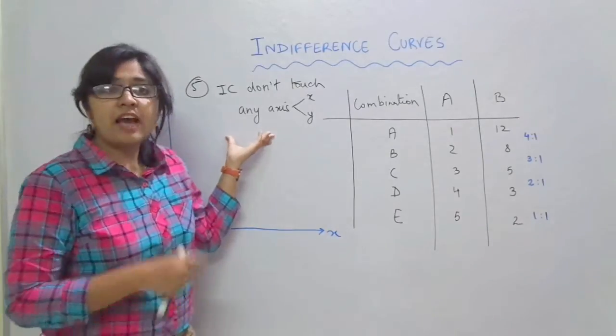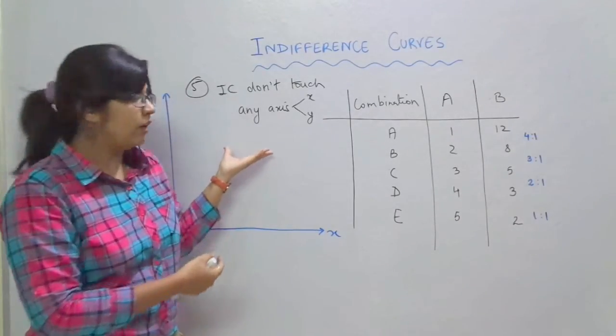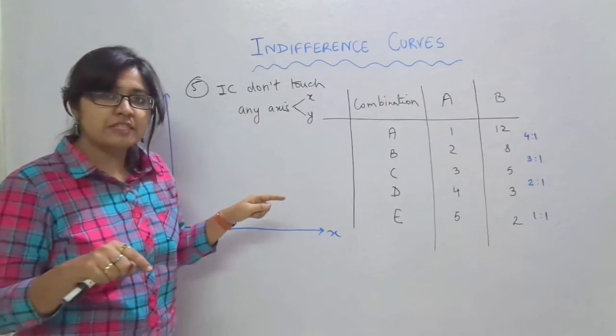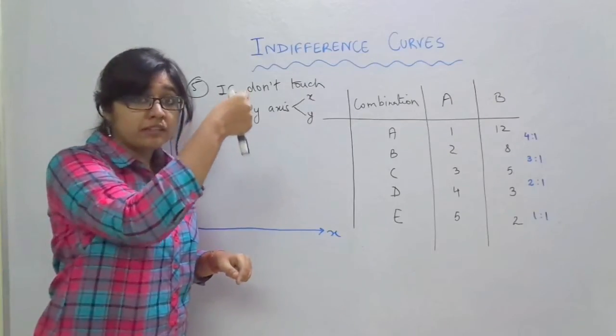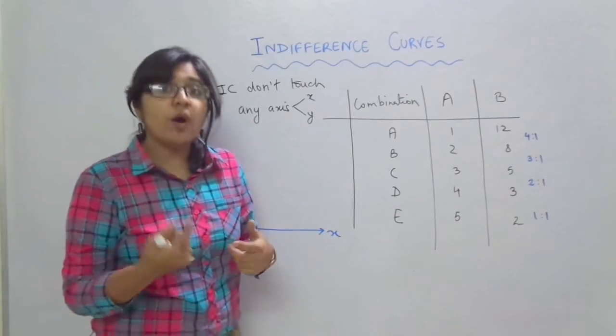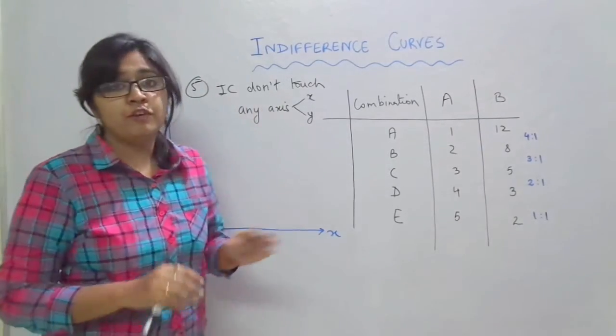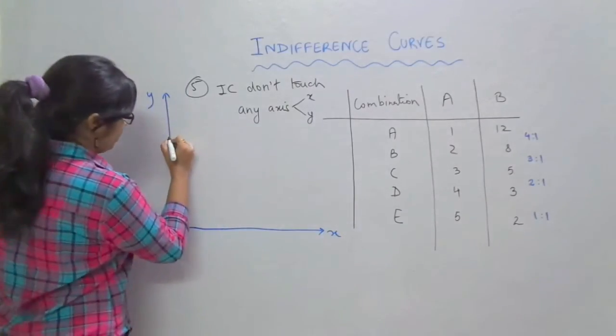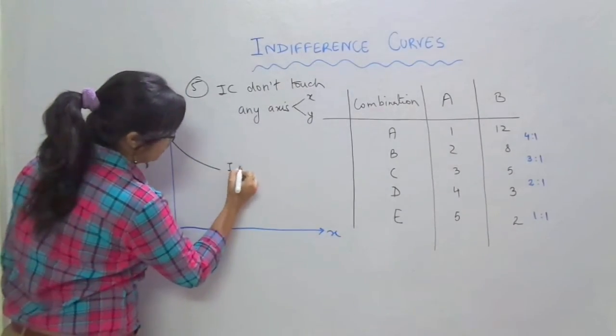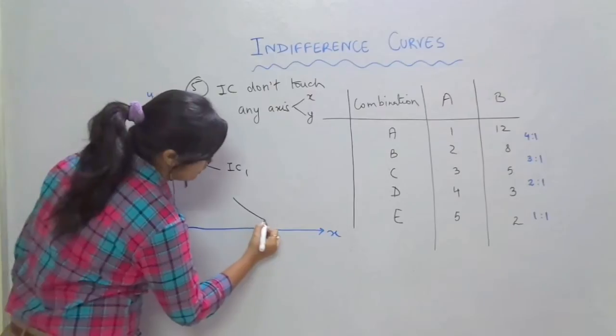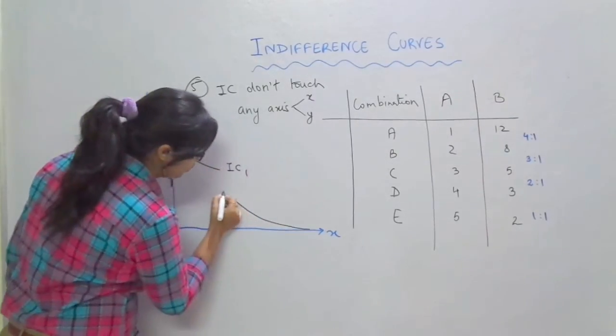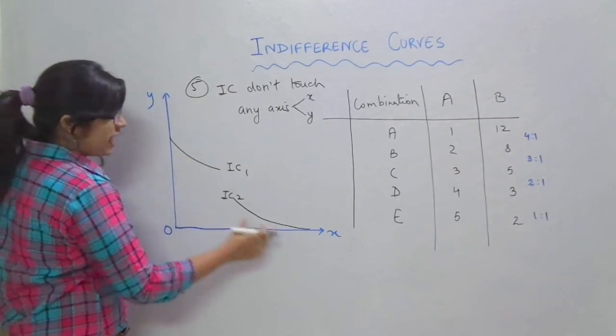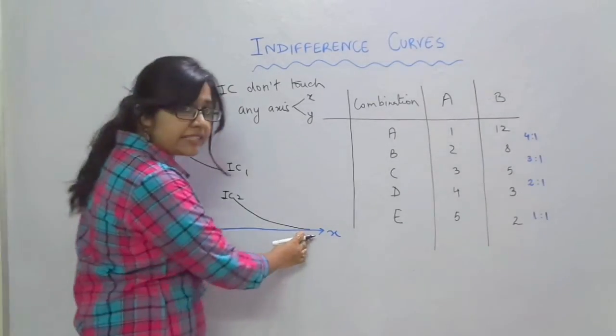So again because we have a negative sense in this property, let's make two different indifference curves touching either of the axis and let's know how indifference curves should not touch each axis. So let's make indifference curve 1 and indifference curve 2. IC1 over here is touching the y axis and IC2 is touching the x axis.